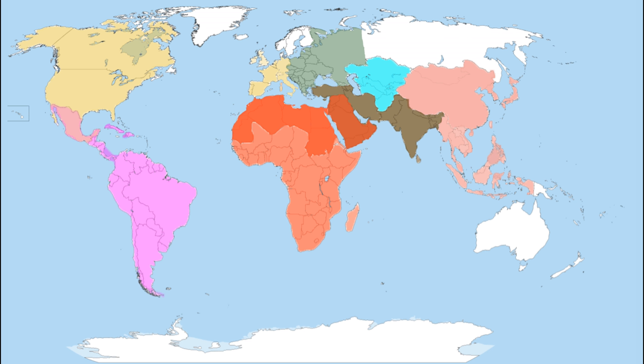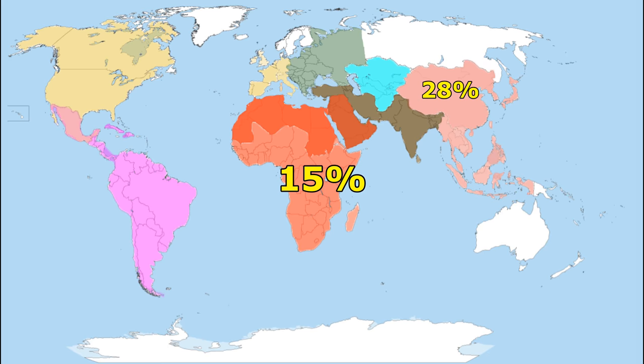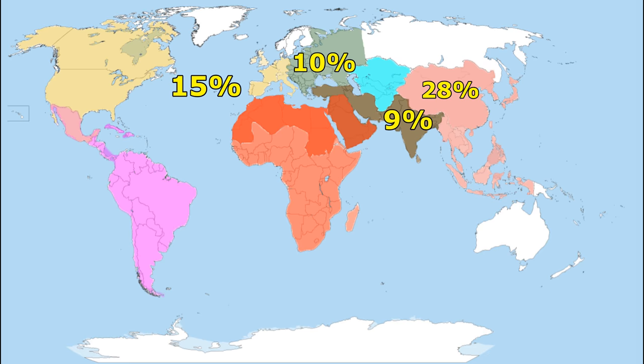East and Southeast Asia has the largest share of outbound students, with 28% of the world total. North America and Western Europe also have a substantial share of outbound students, with 15% of the total. Next in importance are Central and Eastern Europe, South and West Asia, and the Arab states, each with 9% to 10% of the world total number of outbound students.